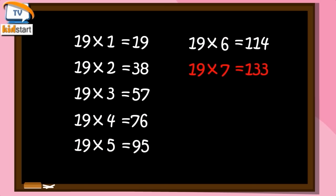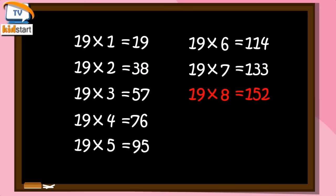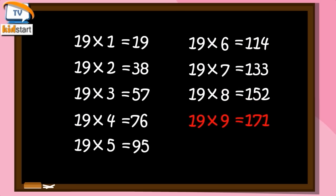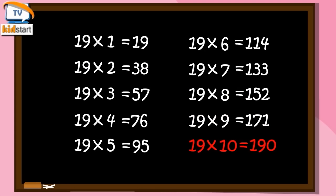Nineteen sevens are one-thirty-three. Nineteen eights are one-fifty-two. Nineteen nines are one-seventy-one. Nineteen tens are one-ninety.